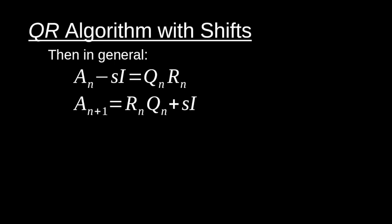The idea is that this is going to speed everything up. The whole reason we're doing these shifts is because it speeds things up. So where does this shift come from? How do we choose a shift? We want to choose a shift that's close to the value of an eigenvalue for our original A matrix — which might seem problematic since computing eigenvalues is the whole point.